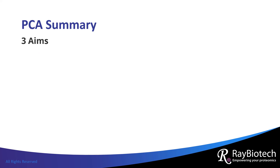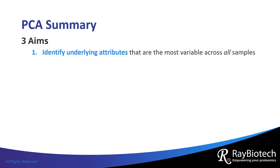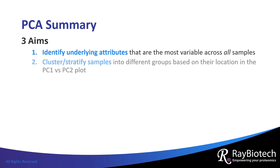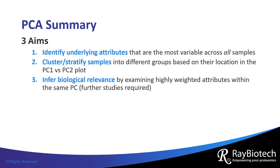To summarize, PCA is used to identify which underlying attributes are the most different across all samples. It can also help to cluster or stratify samples into groups. Finally, sometimes by seeing which attributes are weighted the most within a principal component, a biological association may be inferred. Of course, follow-up studies would be required to confirm such associations.